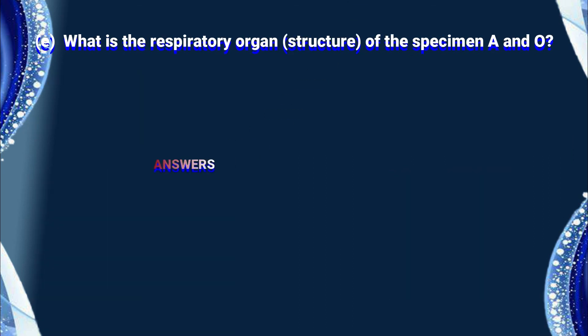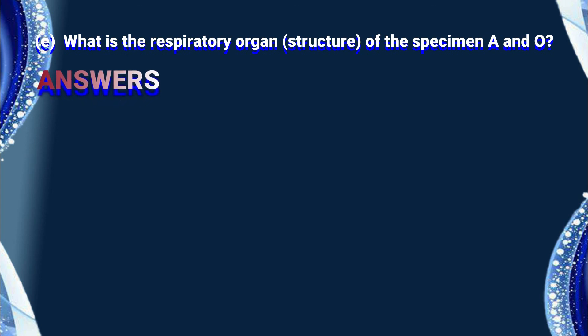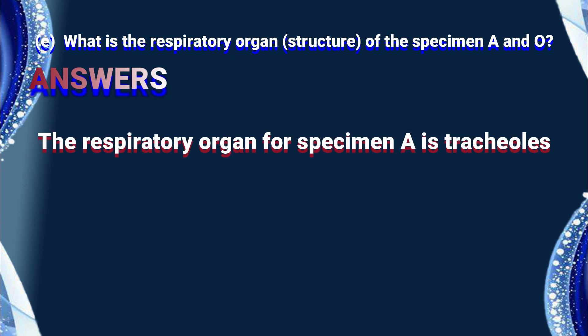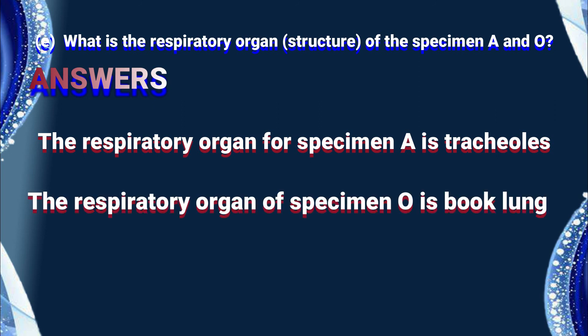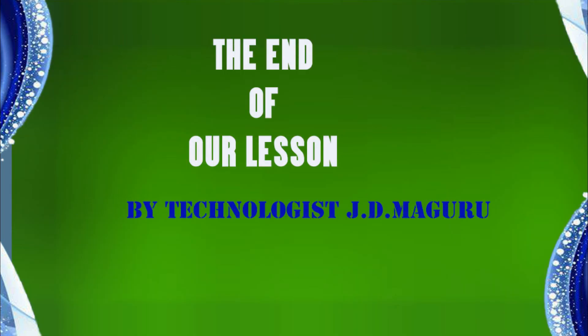The answer for question number five — what is the respiratory organ of specimen A and specimen O? The respiratory organ for specimen A, the housefly, is tracheoles. The respiratory organ of specimen O, the spider, is book lungs. Those are our questions and those are our answers. Thank you for learning with me.